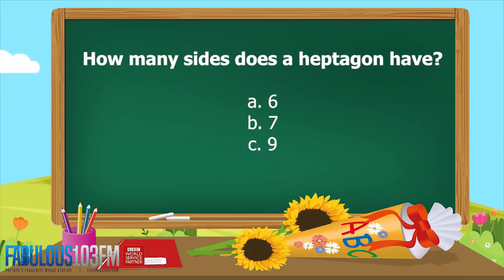how many sides does a heptagon have? Does it have A, six sides, B, seven sides, or C, nine sides? What do you think?